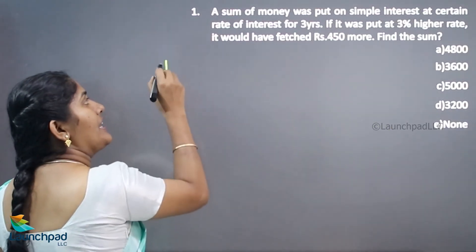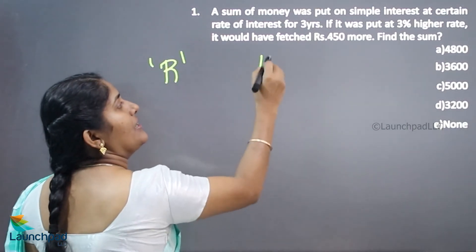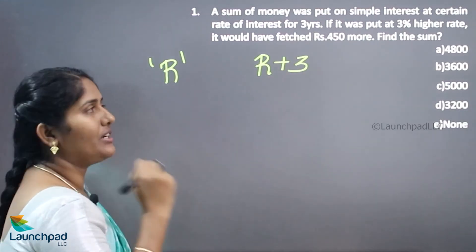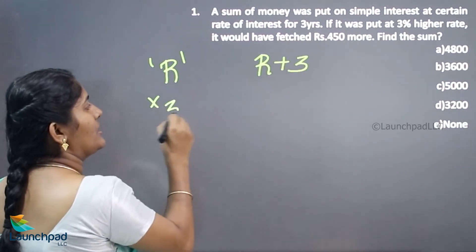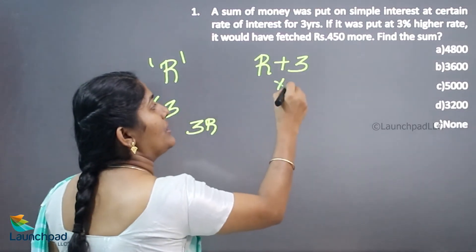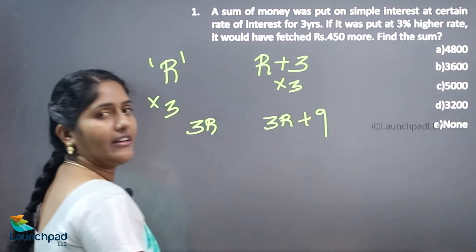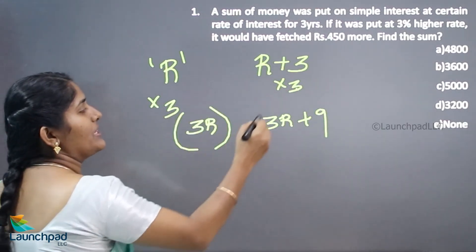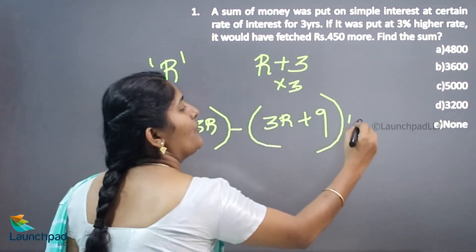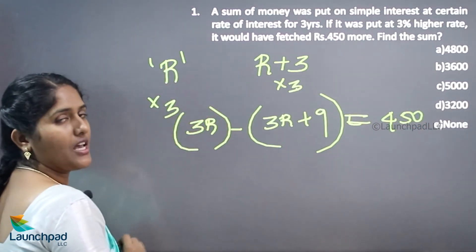We have another method also. We don't know the rate of interest; let the rate be R. The new rate of interest is R plus 3. For three years, that gives 3R and 3(R + 3), which is 3R plus 9. The difference between the previous rate of interest and the new rate of interest corresponds to 450 rupees.